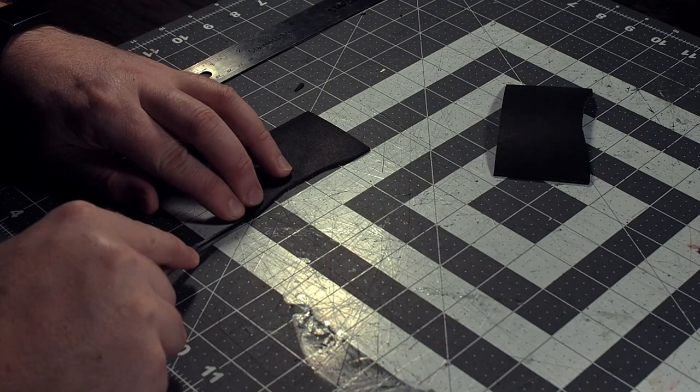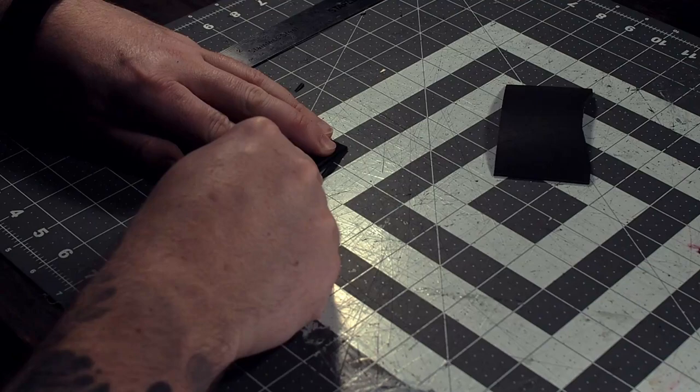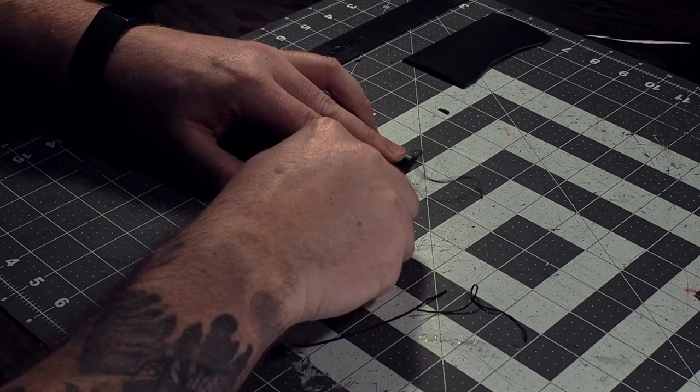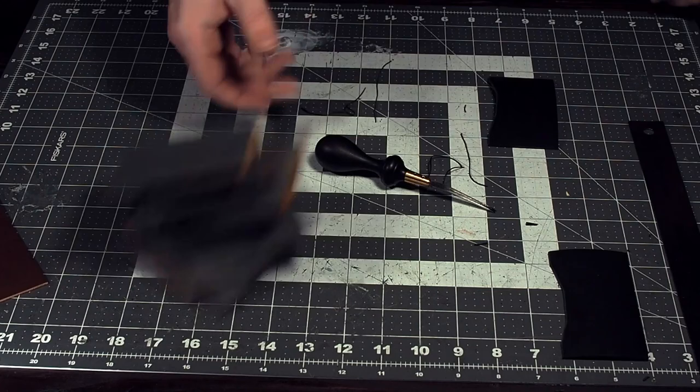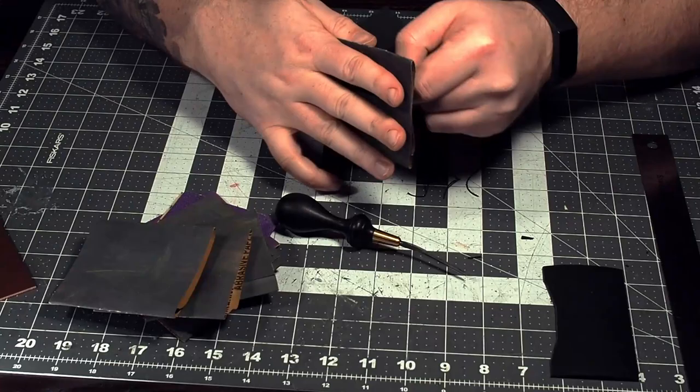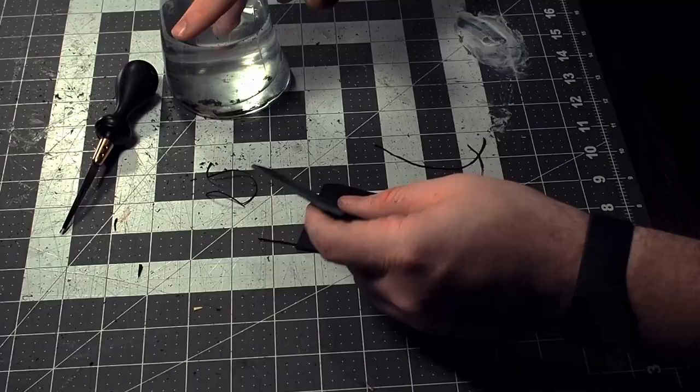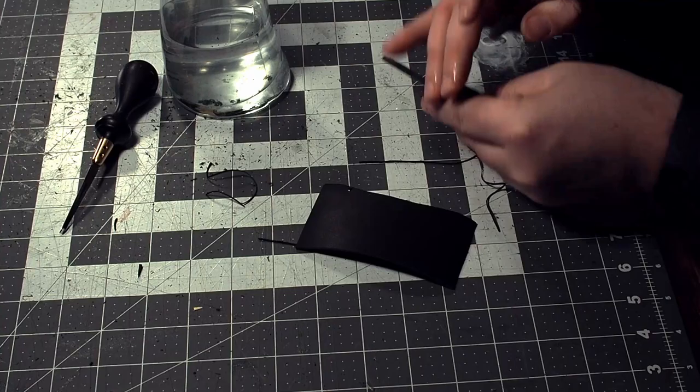You want to bevel and burnish the tops of your pockets just because it helps cards slide in and out easier and it just looks nicer. Once you're unbeveling you're just going to sand. I go from about 320 grit and I went down to 800 or so. Sanding makes the biggest difference when you're trying to get a nice edge. And now I'm just going to burnish them.